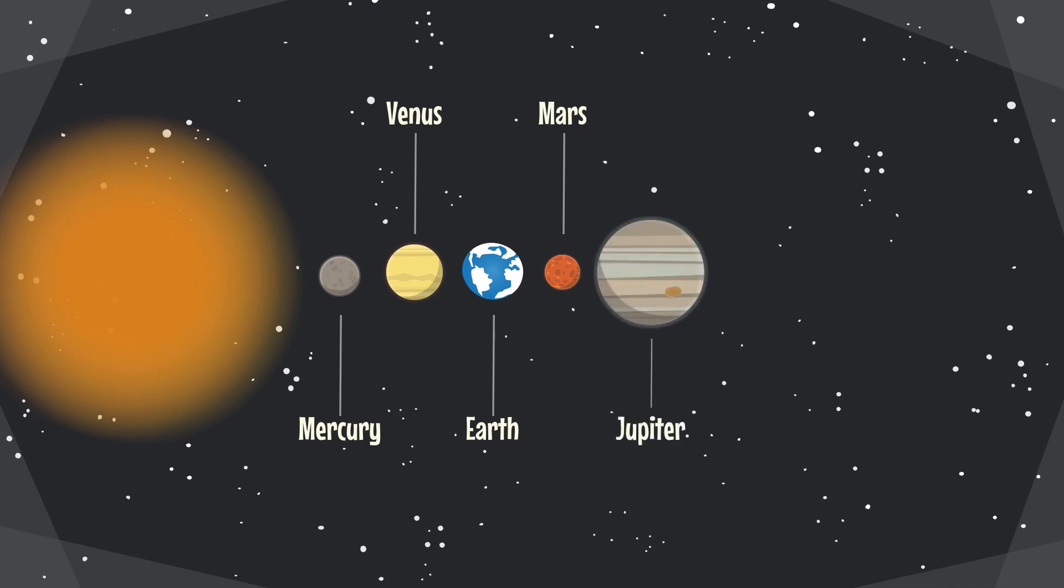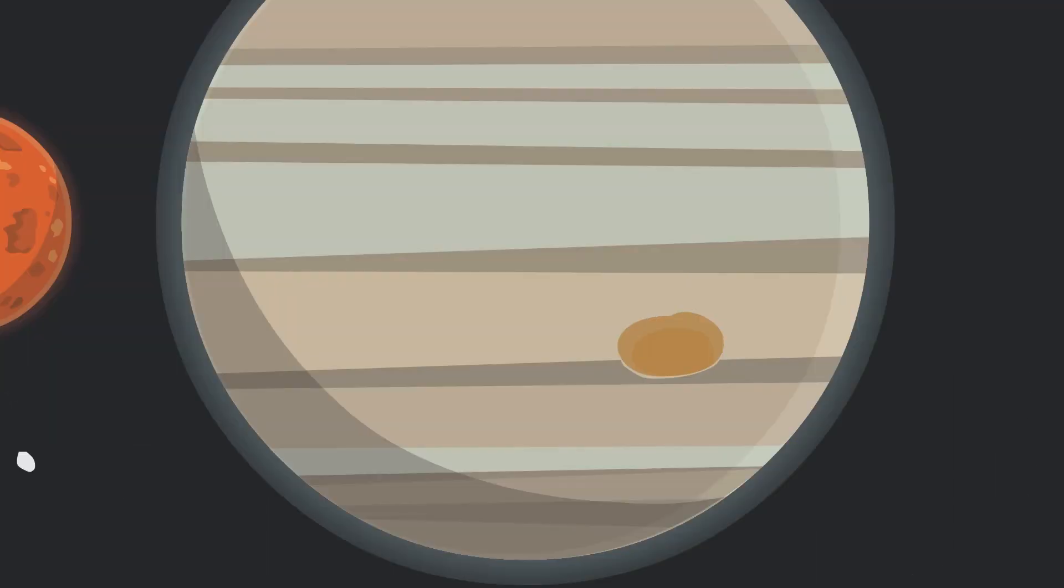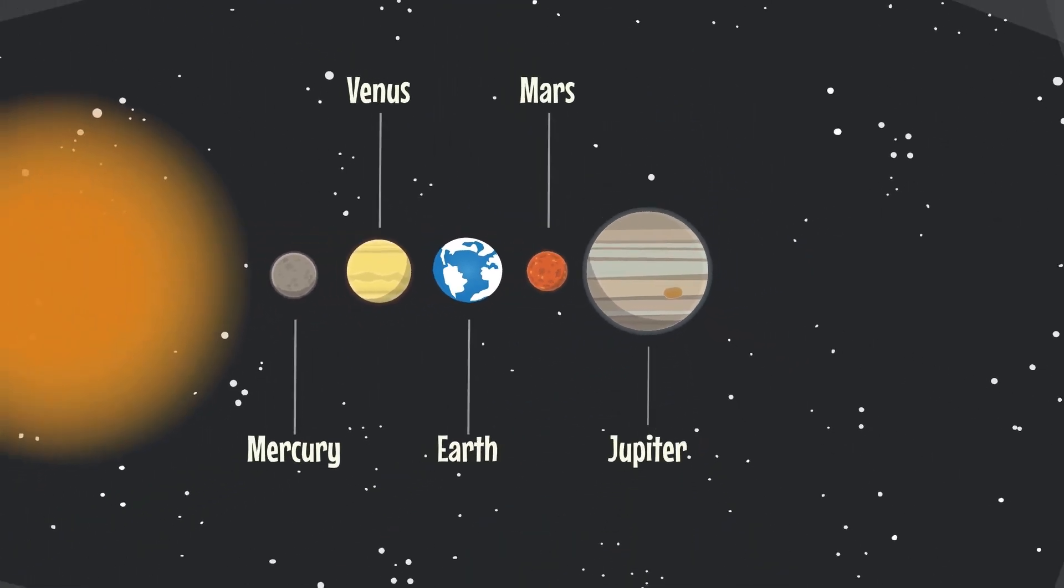Next is Jupiter. It's the largest planet in our solar system. It's so big you can fit 1,300 Earths inside of it. Right now Jupiter has a raging storm that is twice the width of Earth. You can see the red spot on the planet. If Jupiter was the size of a basketball, Earth would be the size of a grape.